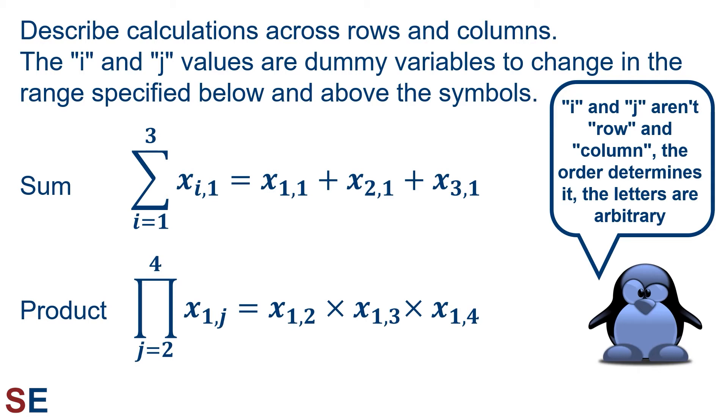In our summation, we're looking at x i comma 1, so the values for the row are changing. Looking at the values above and below the symbol, we see that the value of i starts at 1 and increases up to 3. This would give us x 1 comma 1 plus x 2 comma 1 plus x 3 comma 1. In our product, we're looking at x 1 comma j, so the values for the column are changing. Looking at the values above and below the symbol, we see that the value of j starts at 1 and increases up to 4. This would give us x 1 comma 2 times x 1 comma 3 times x 1 comma 4.